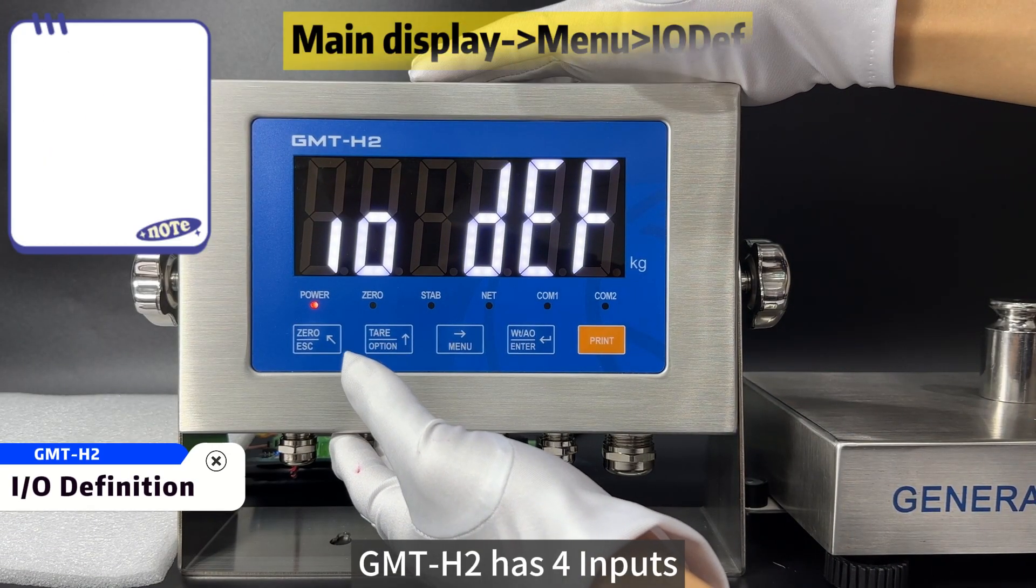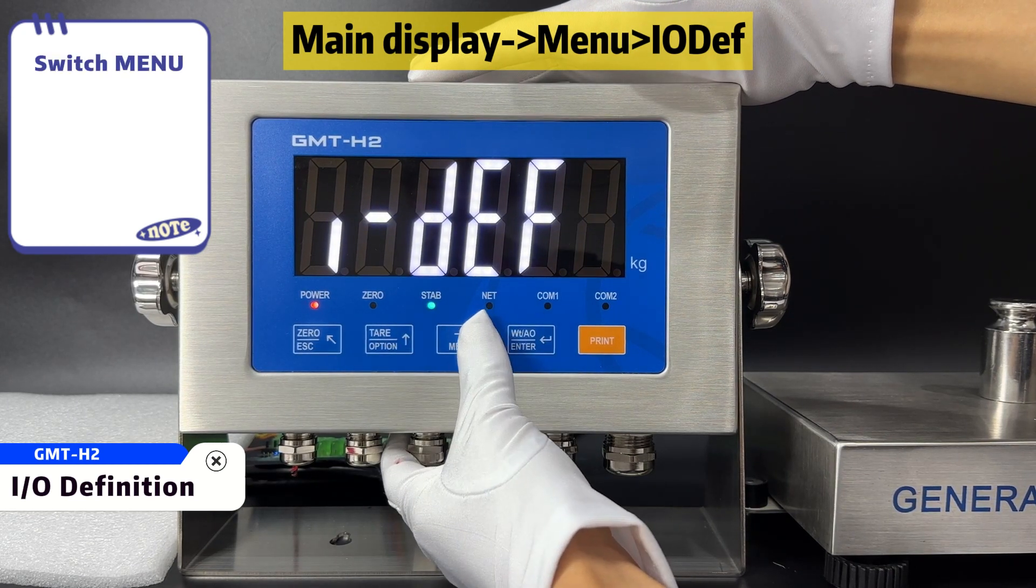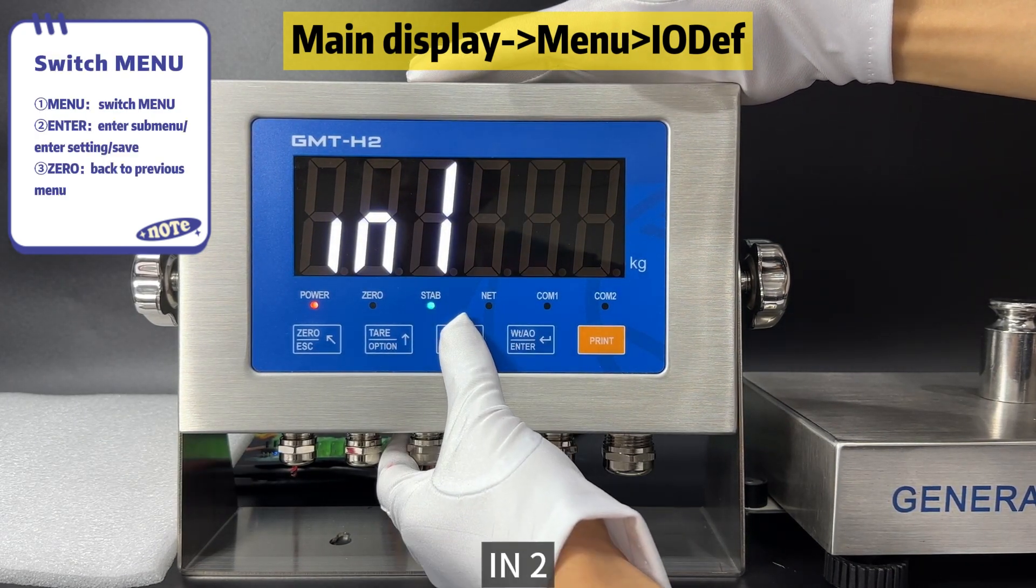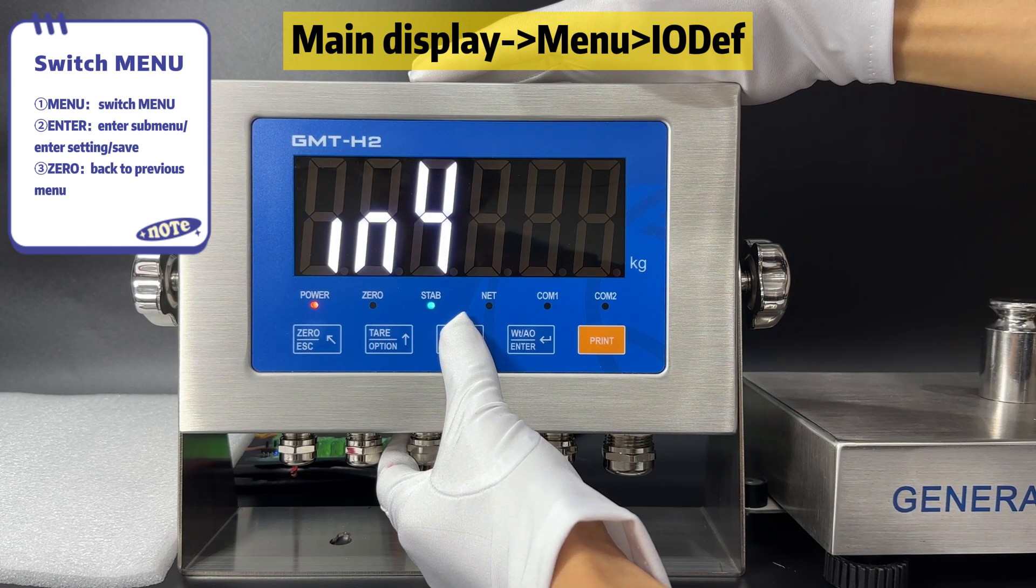GMT-H2 has four inputs, which are IN1, IN2, IN3, and IN4.